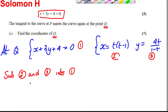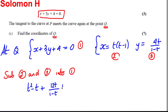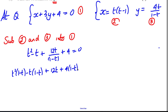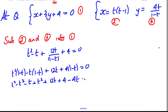Multiplying everything by (1 subtract t) gives: t squared(1 subtract t) minus t(1 subtract t) plus 12t plus 4(1 subtract t) equals 0. Expanding: t squared minus t cubed minus t plus t squared plus 12t plus 4 minus 4t equals 0.